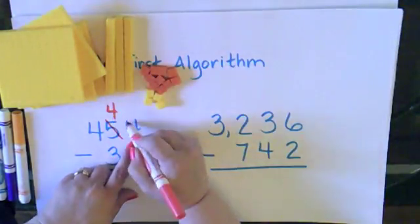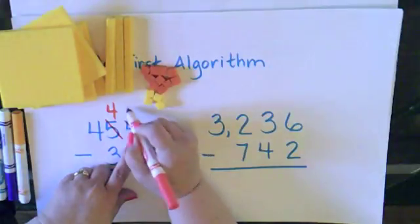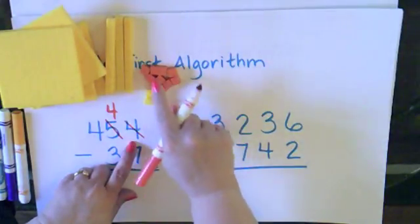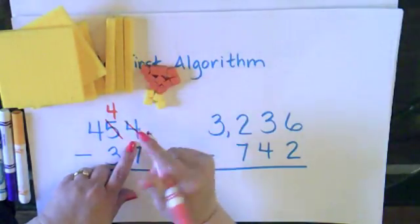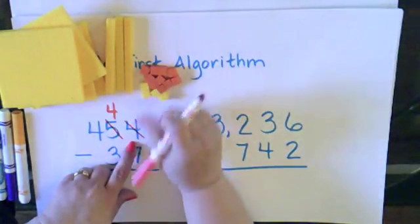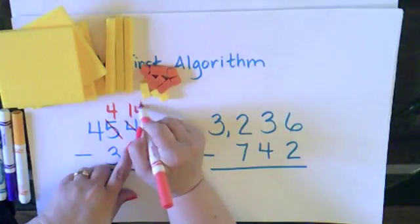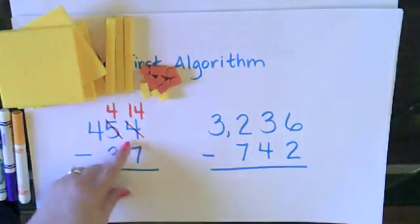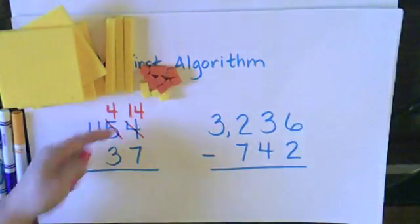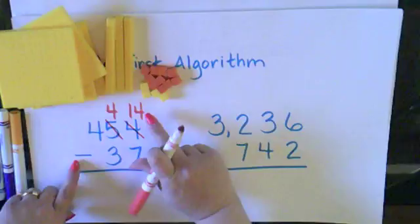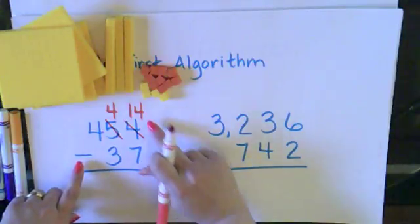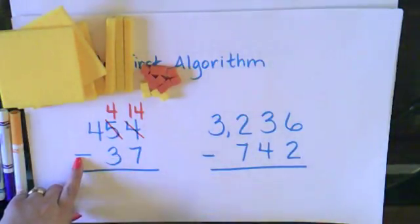And I don't have 4 1s anymore. I have the 10 plus the 4 that were originally there, so I have 14 1s. Now I can look again and say, can I do the subtraction? 14 1s take away 7 1s — yes, I can.